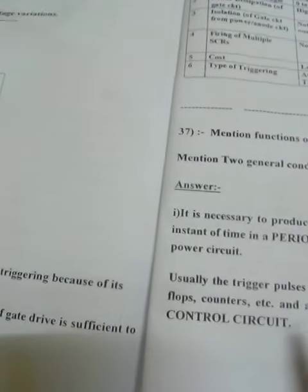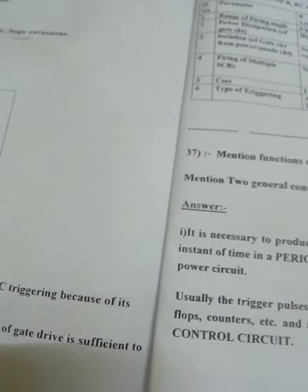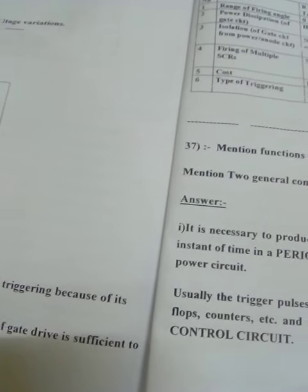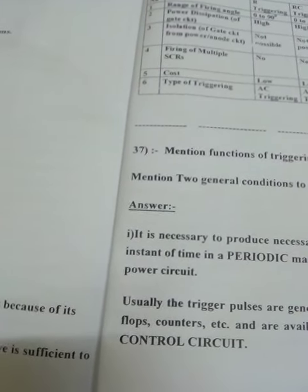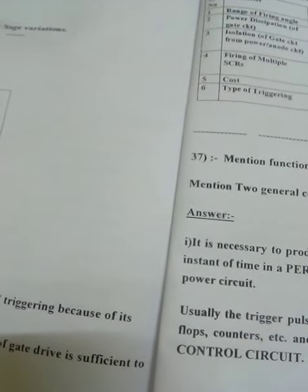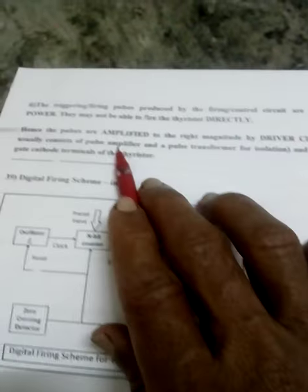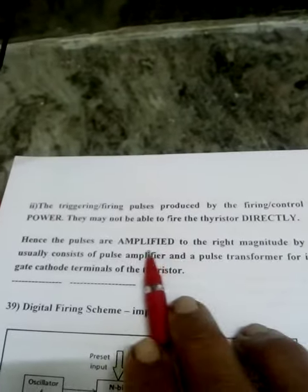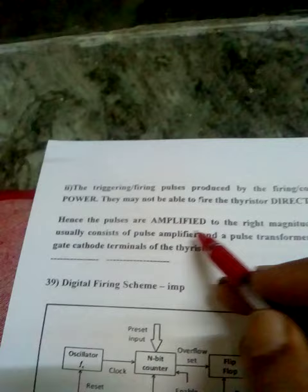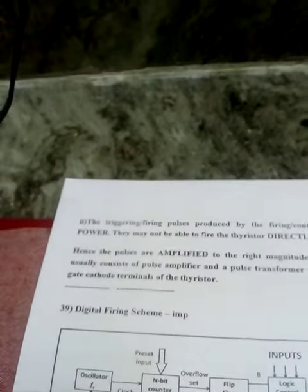The second function: in some cases the gate signal coming out of the firing circuit may be weak, so you may need an amplifier between the gate circuit and the SCR's anode and cathode. So first, firing at the right instant; second, amplification — these two functions, and firing in a periodic manner.